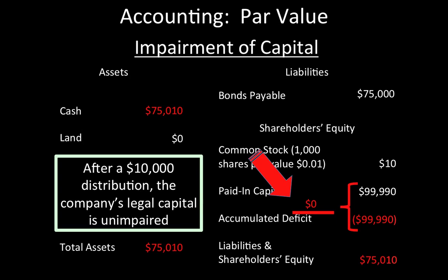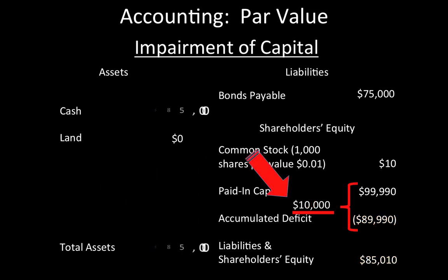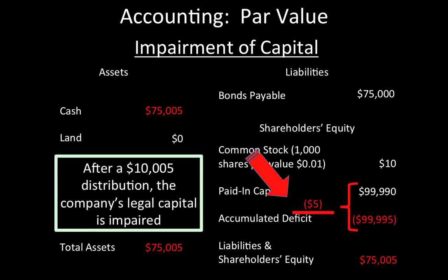However, if the company distributed $10,005, the accumulated deficit would completely offset the paid-in capital with $5 left over. This amount would impair the company's legal capital. The extra $5 distribution would be prohibited because the company's legal capital would be impaired. The company's assets must always equal at least the amount of its liabilities plus its legal capital — in this case, $75,000 plus the $10 in par capital.